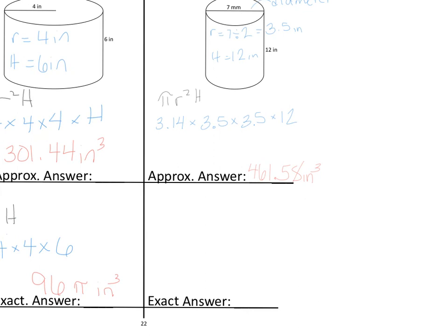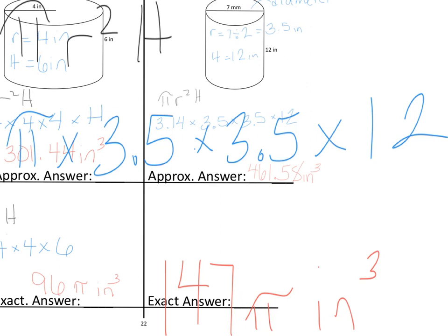To get the exact answer, we leave pi alone. It stays as the symbol. So all we have to multiply is r squared times the height, and that gives us 147. We know we would need to multiply that by pi, and that would give us our exact volume because we have not had to round the answer.